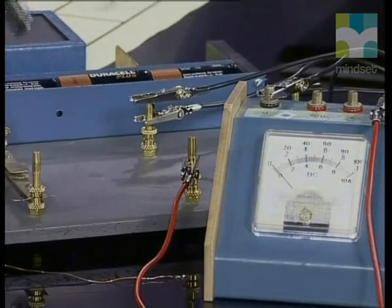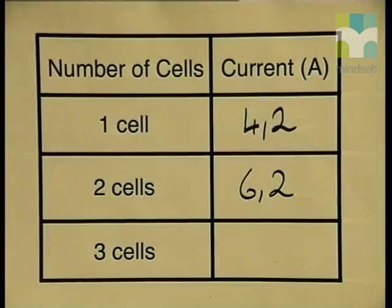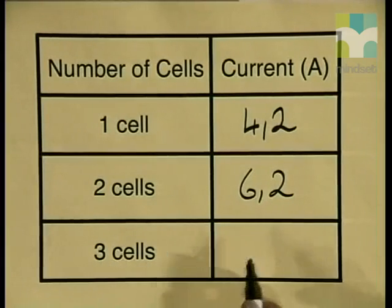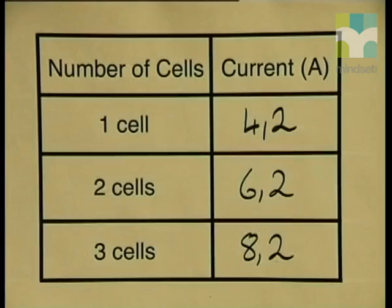I have now put three cells into my electrical circuit. Closing the switch, the reading is 8.2 amperes — so three cells gives a current reading of 8.2 amperes. Did you notice that the current increased as I increased the number of cells in the circuit? The more cells we have in series, the greatest amount of electrical energy is provided and the current will increase.